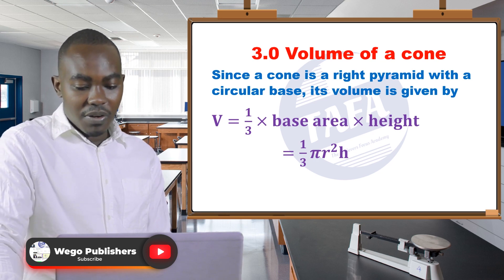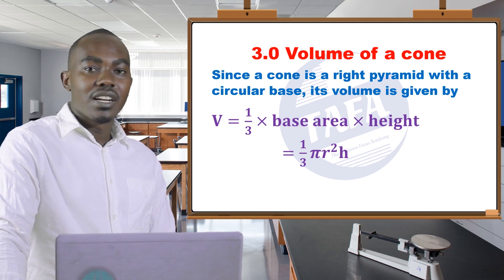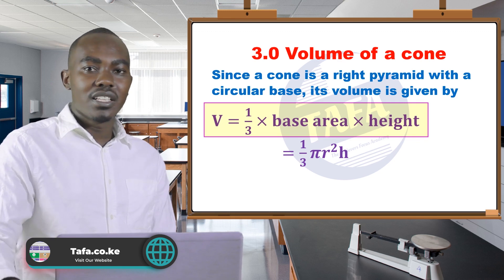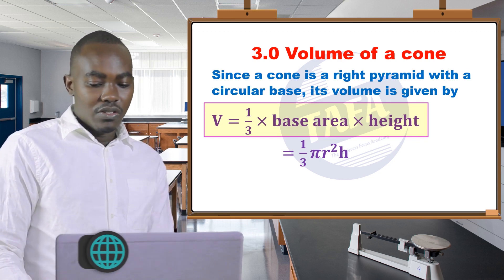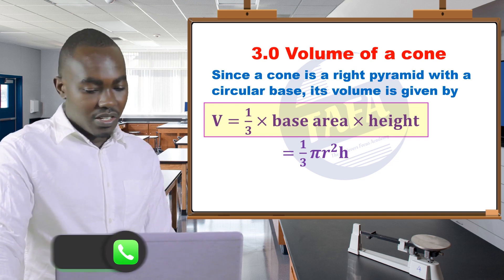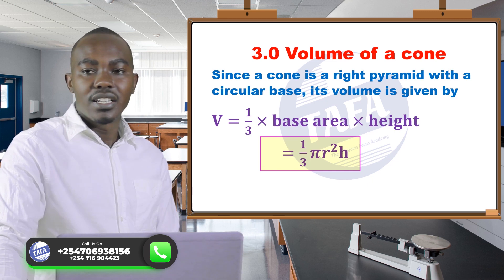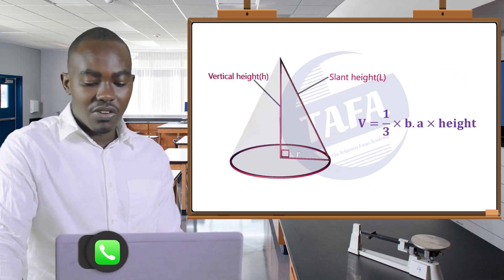The volume of a cone will be given as one-third times the base area times the height. And the base area is the area of a circle, so the formula will be one-third times pi r squared times h, and h is the vertical height.